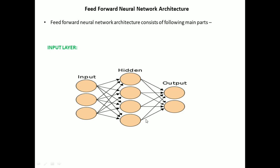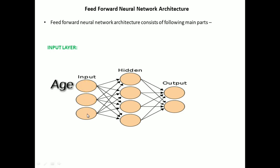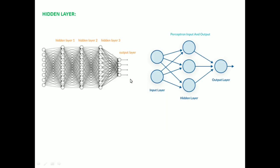Each input node represents a feature of the data. For example, if we have a dataset with three attributes — age, salary, and city — we will have three neurons in the input layer representing each feature. The next layer in the architecture is the hidden layer, which consists of the actual artificial neurons. A network with only one hidden layer is a shallow neural network, while a network with more than one hidden layer is a deep neural network.